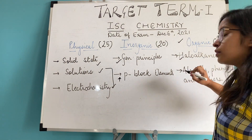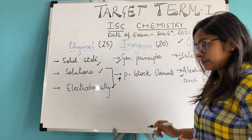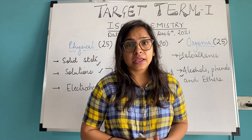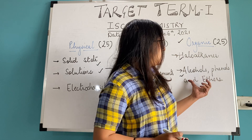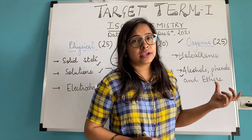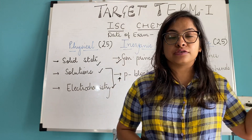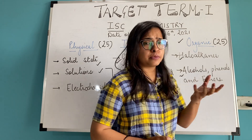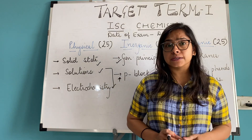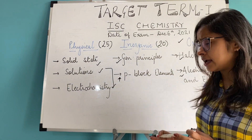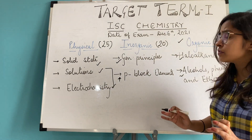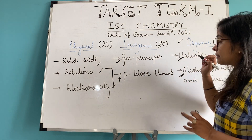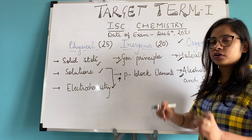The Organic chapters are Haloalkanes, Haloarenes, Alcohols, Phenols, and Ethers. Ethers have been removed from your syllabus, but otherwise there is no other major removal in this chapter. From the reduced syllabus, only the production of Methanol via the Bosch process has been removed, along with Ethers. These are very important lessons and both are time-consuming. Both are very important.